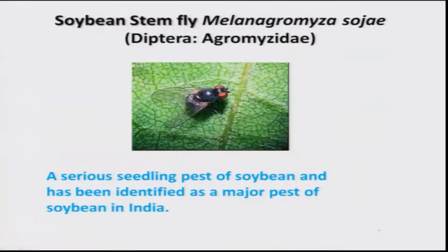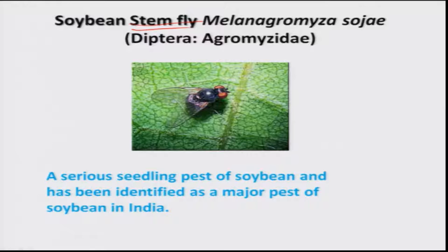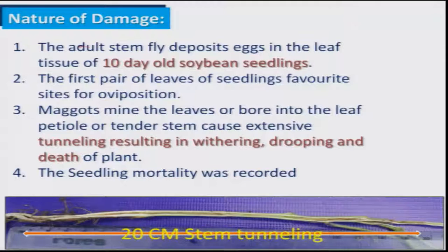We will understand in detail about the pests of national significance. The major important pest is stem fly, which occurs in almost all soybean growing areas. It is a seedling pest, technically referred to as Melanogromyza sosae belonging to family Agromyzidae, order Diptera. The adult fly prefers almost 10-day-old seedlings for egg laying and lays eggs on the first pair of leaves.